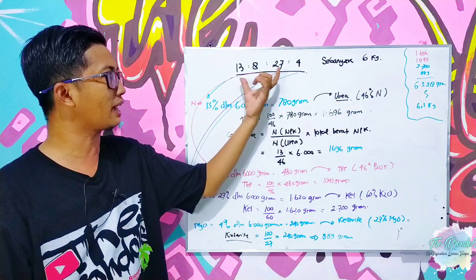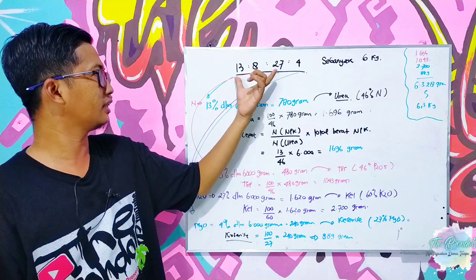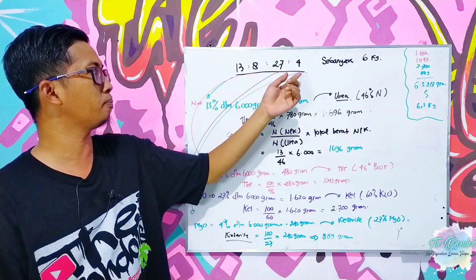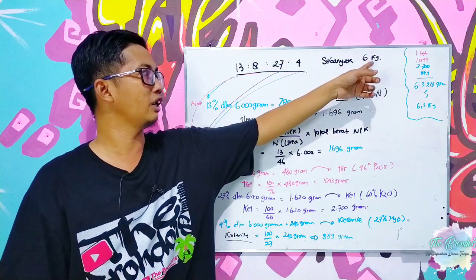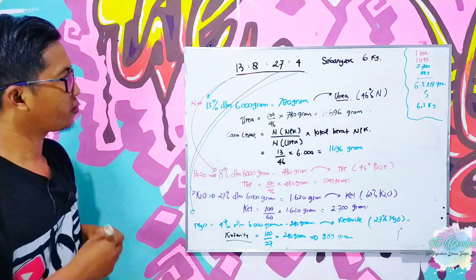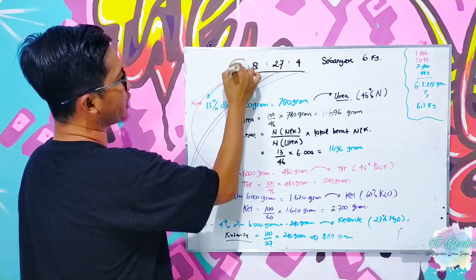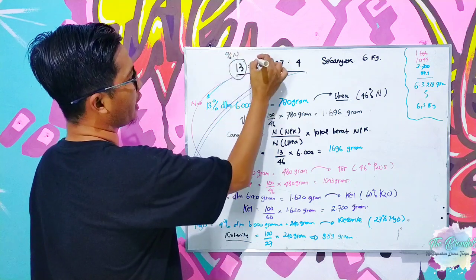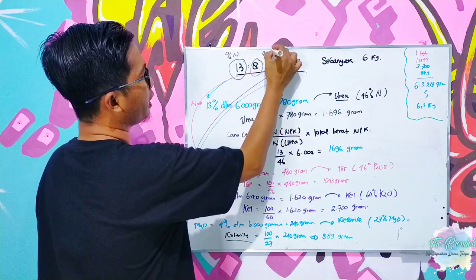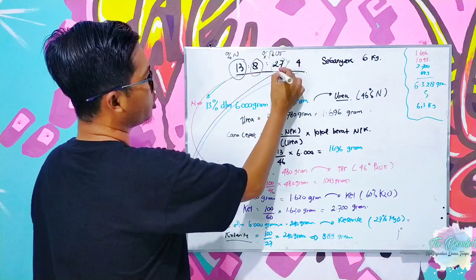Jadi kita langsung saja, kita akan mengkonversi menggunakan pupuk tunggal ini untuk disetarakan kandungannya di dalam 13-8-27-4 sebanyak 6 kg.